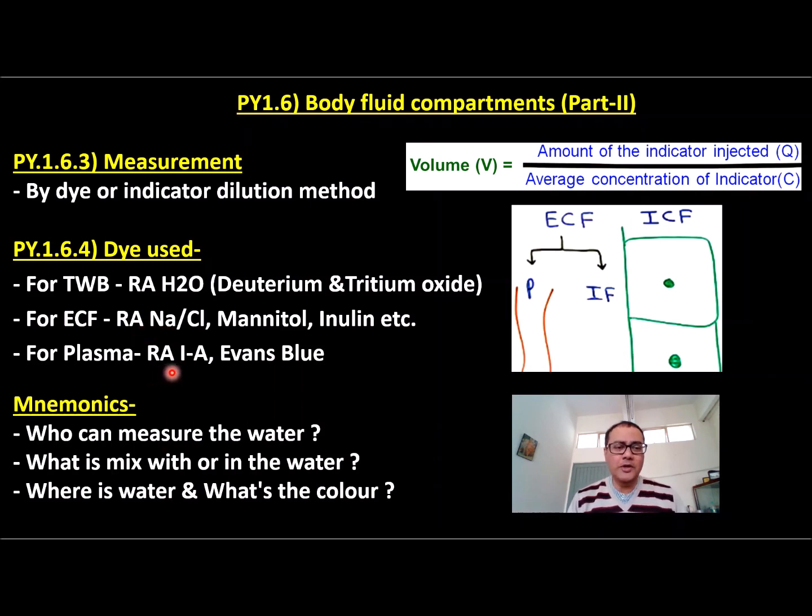As far as intracellular fluid is concerned, it can be calculated, it cannot be directly measured. So we can calculate like this: total body water minus extracellular fluid. Same thing for interstitial fluid also, it can be calculated like extracellular fluid volume minus plasma volume.